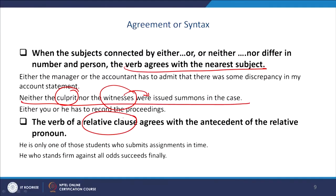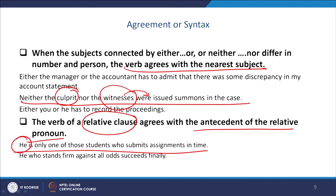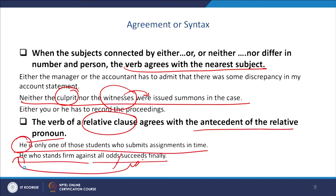We have also taken another example on the verb of a relative clause. The verb of a relative clause will agree with the antecedent of the relative pronoun. For example: 'He is only one of those students who submits assignments in time' — here the nearest subject might seem to be 'students,' but 'submits' is used because the antecedent of the relative pronoun 'who' is 'he.' The second sentence: 'He who stands firm against all odds succeeds' — 'succeeds' agrees with 'he.'